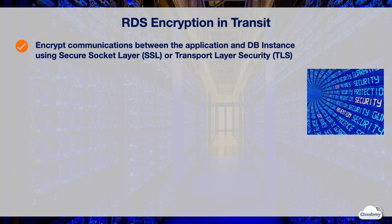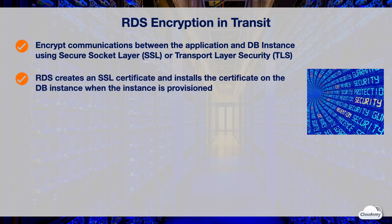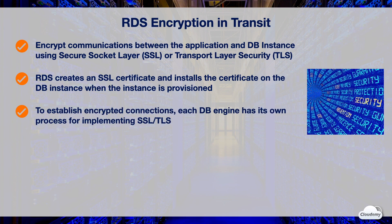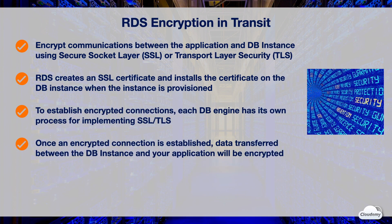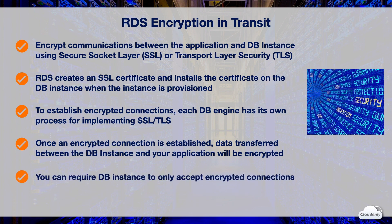You can encrypt communications between the application and DB instance using Secure Socket Layer or Transport Layer Security. RDS creates an SSL certificate and installs the certificate on the DB instance when the instance is provisioned. To establish encrypted connections, each DB engine has its own process for implementing SSL or TLS. Once an encrypted connection is established, data transferred between the DB instance and your application will be encrypted during transfer. You can also require your DB instance to only accept encrypted connections.